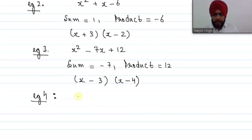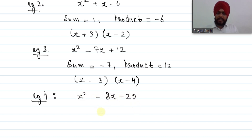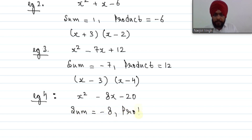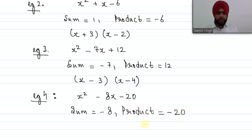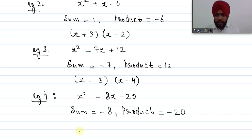Example 4: x² − 8x − 20. The sum is −8 and the product is −20. Since both are negative, the big number will be negative and the small number will be positive. The two numbers whose product is −20 and sum is −8 are −10 and 2. So the factors are (x − 10)(x + 2).